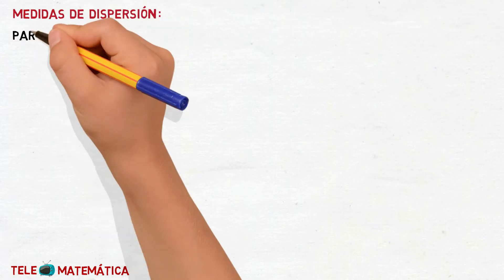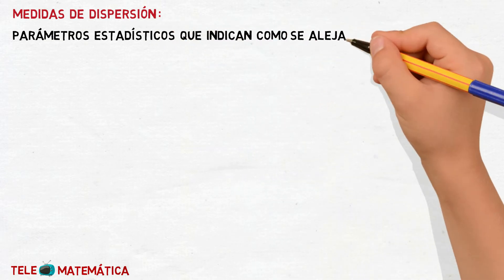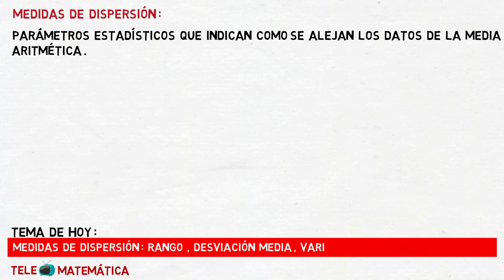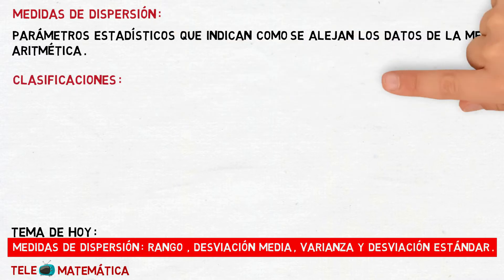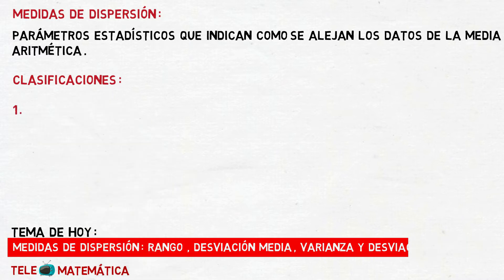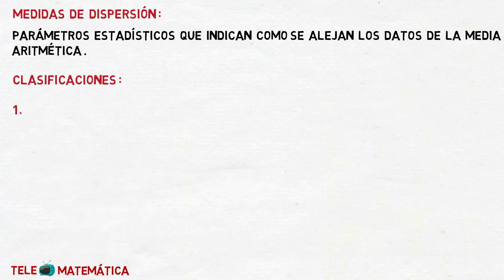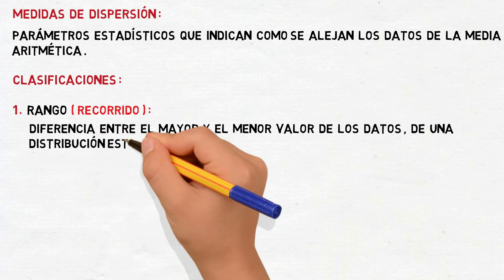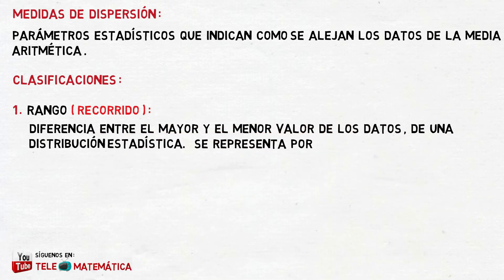To start with the video, we will first introduce what are the dispersion measures, defined as statistical parameters that indicate how the data are apart from the arithmetic mean. Within the dispersion measures, there are several classifications. The first classification is range — also called journey — defined as the difference between the greater and the lower value of the data of a statistical distribution, represented by the letter R.